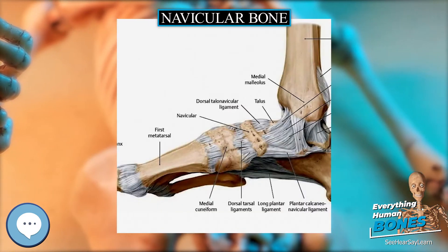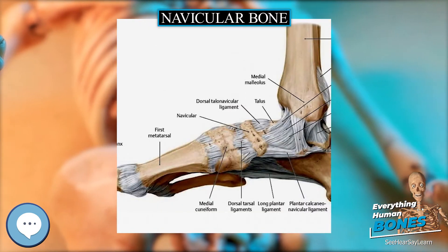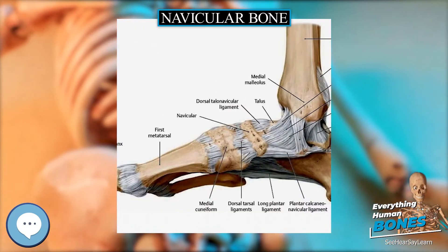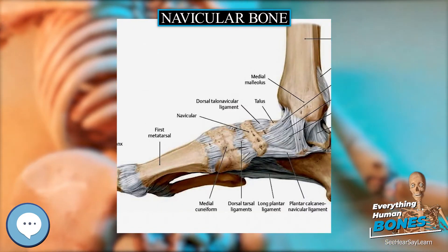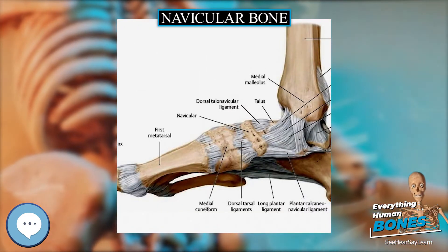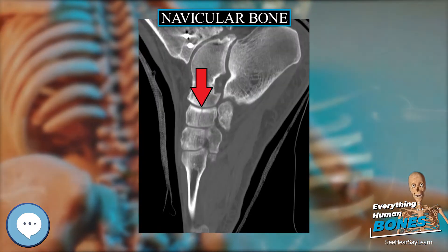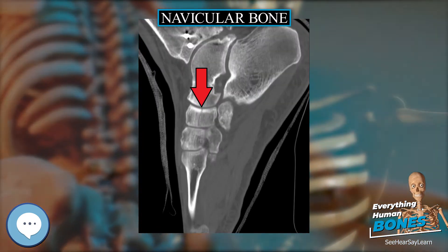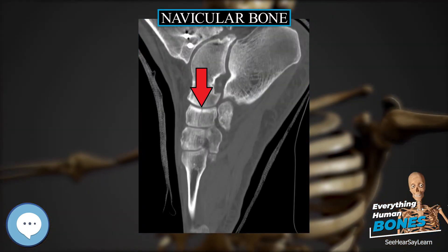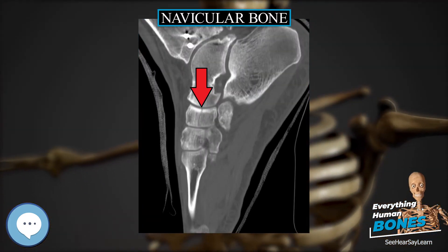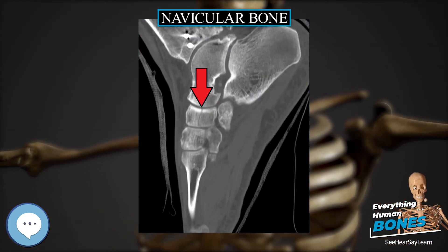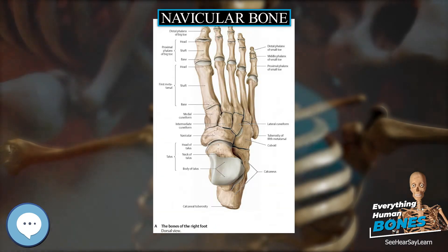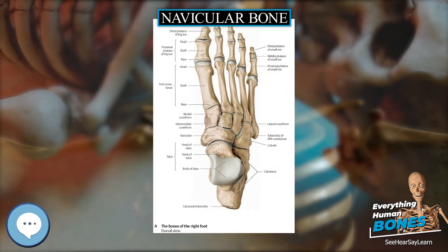The horse has a sesamoid bone called the navicular bone, located within the hoof, that lies on the palmar aspect of the coffin joint between the second phalanx and third phalanx, or coffin bone.